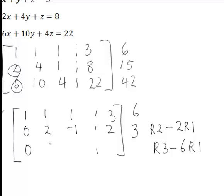4 minus 6 times 1 is negative 2. 22 minus 6 times 3 is 4. And the updated row sum there is 6 which you could also verify is correct.